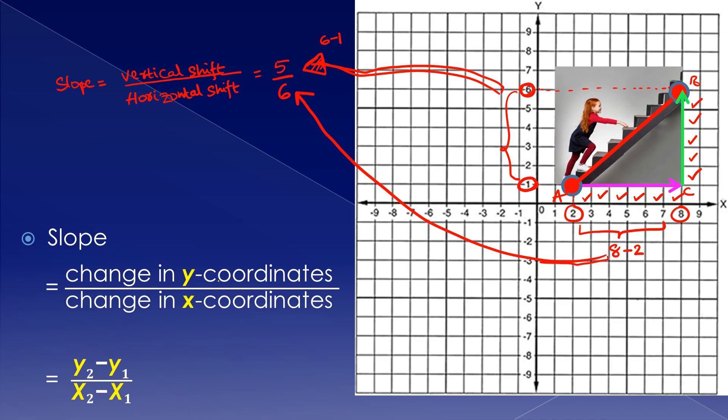So in brief, slope equals change in y coordinates over change in x coordinates gives us the slope of the given line.